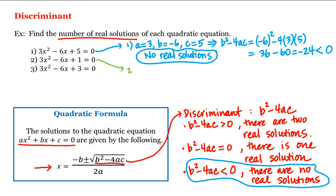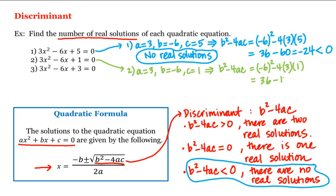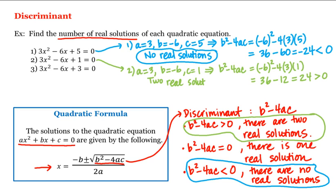For the second equation, a = 3, b = −6, and c = 1. The discriminant b²−4ac = (−6)² − 4(3)(1) = 36 − 12 = 24, which is greater than 0. That means we're in the first case, and therefore our second equation has two real solutions.